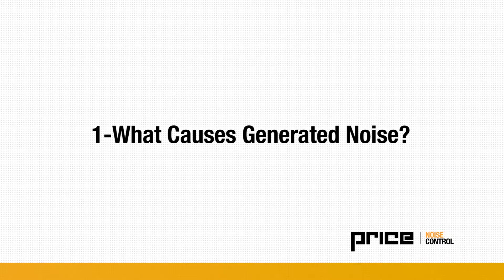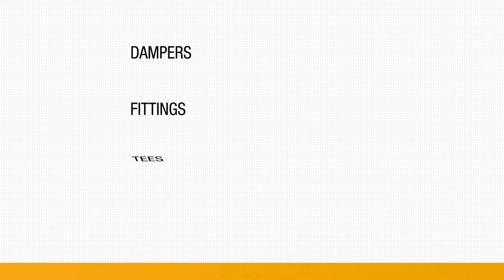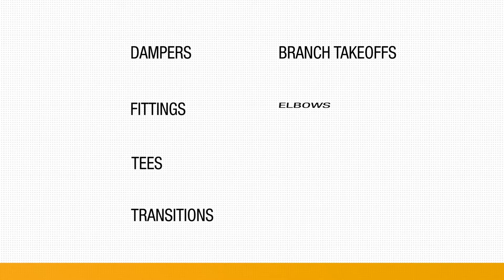What causes generated noise? In duct systems, airflow turbulence can occur at numerous elements including dampers, fittings, tees, transitions, branch takeoffs, elbows, air devices, and silencers. While mechanical equipment is often the source focused on during acoustical discussions, noise generated by duct elements can drive the occupant noise levels, especially when elements are in close proximity to the receiver. It's important to consider generated noise especially at higher duct air velocities and when low noise levels are required.